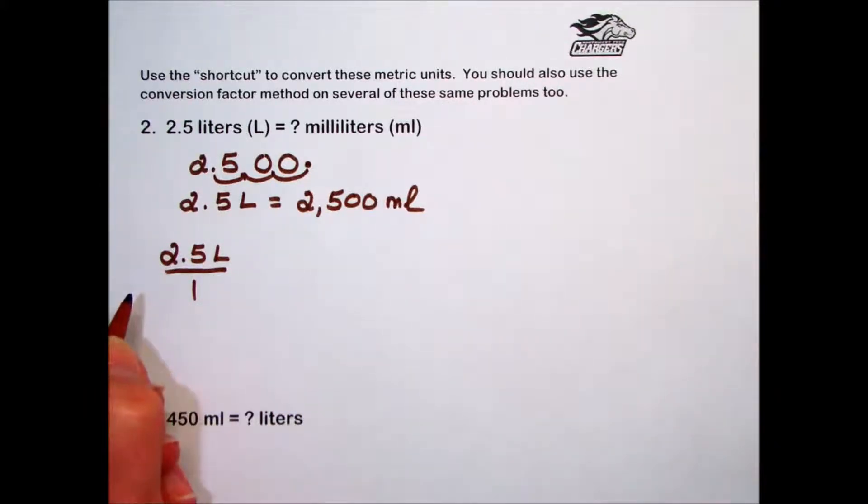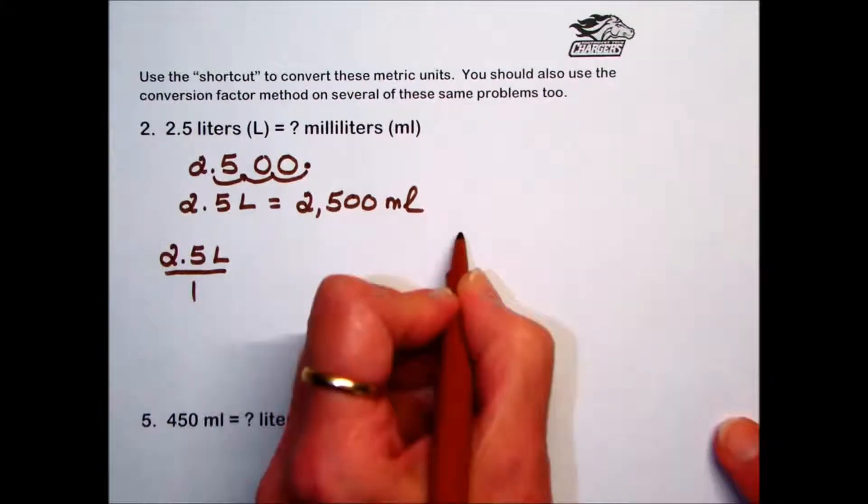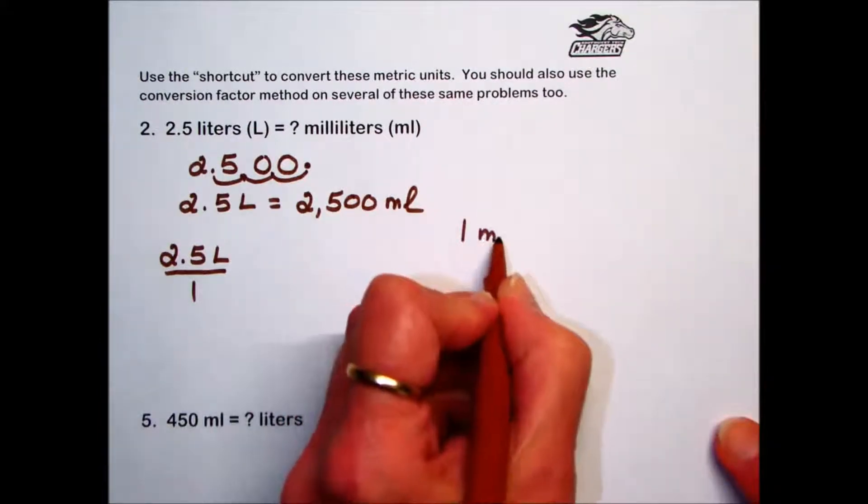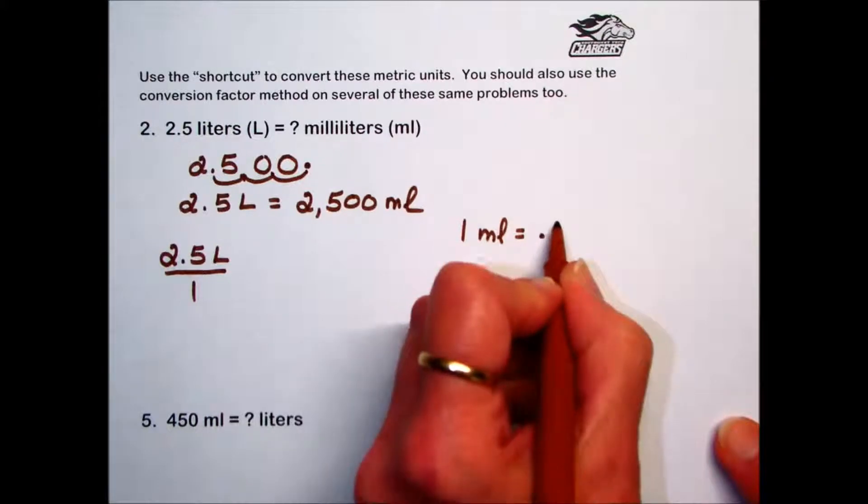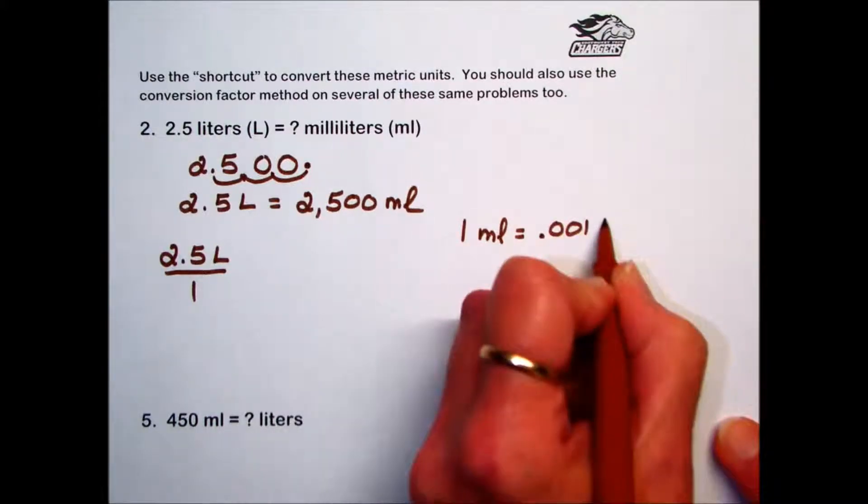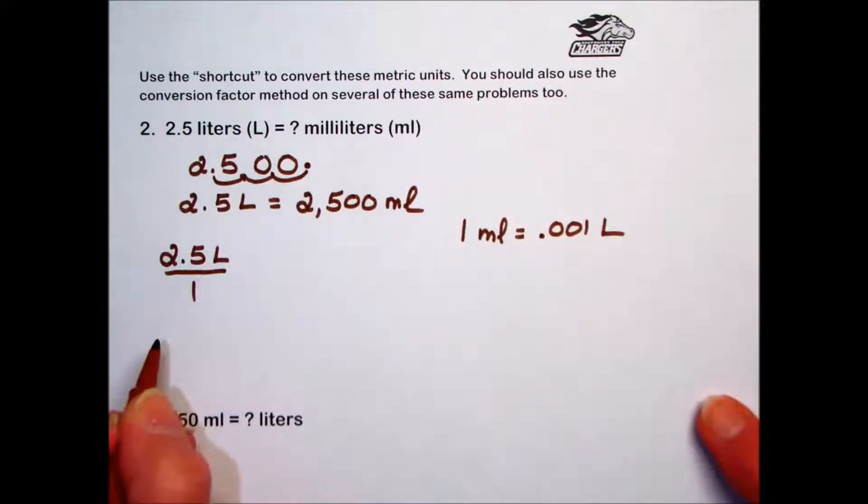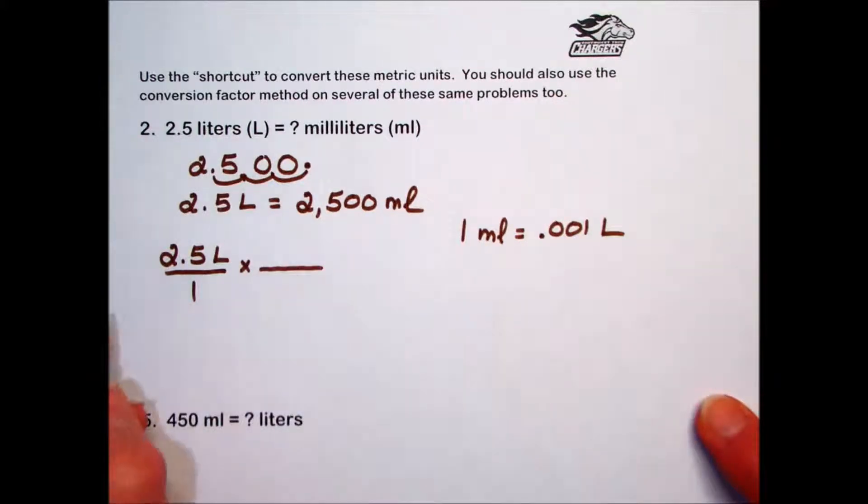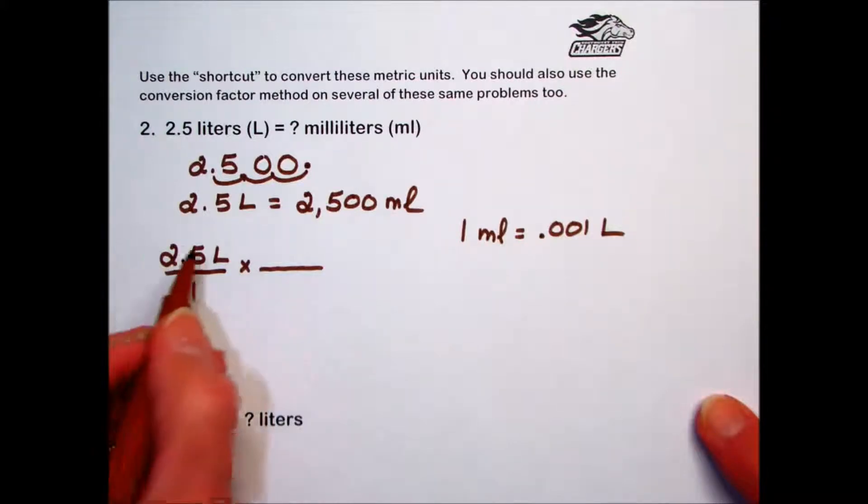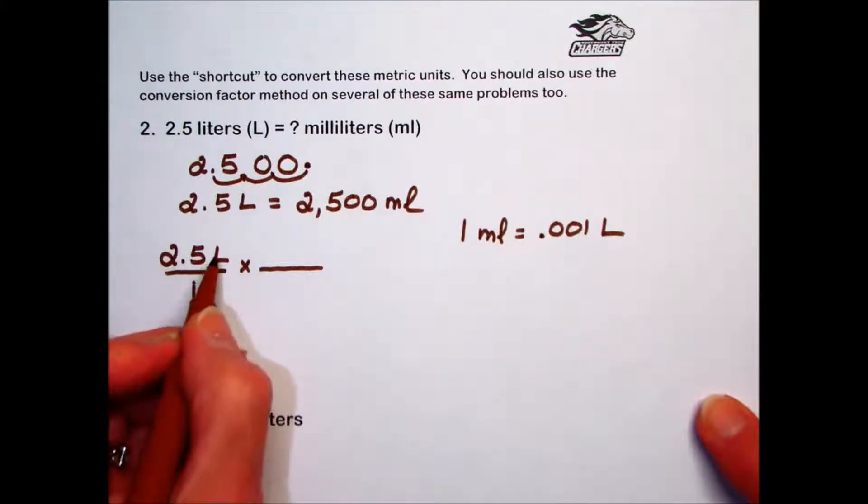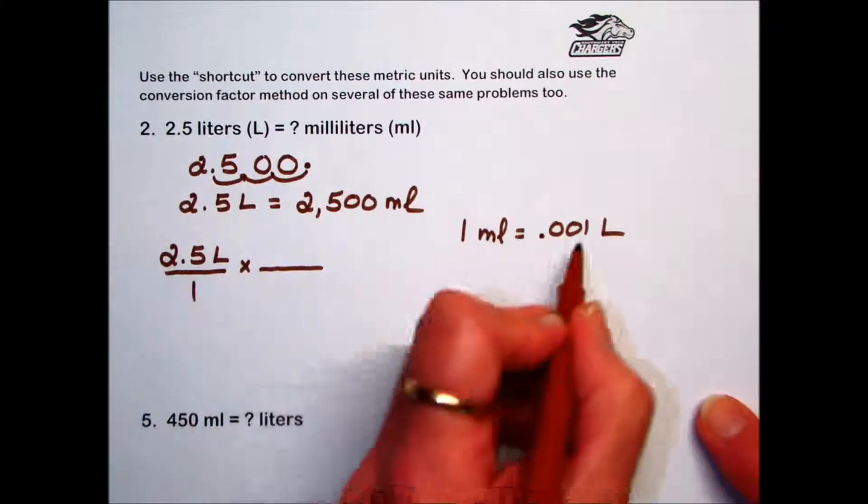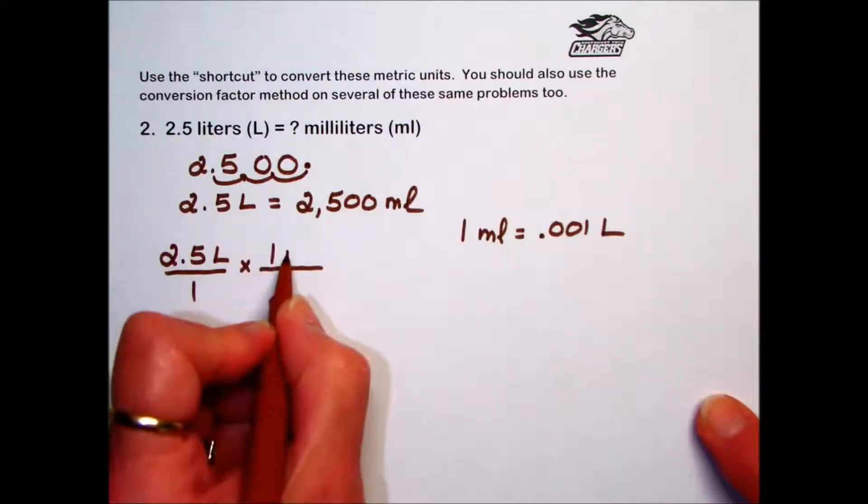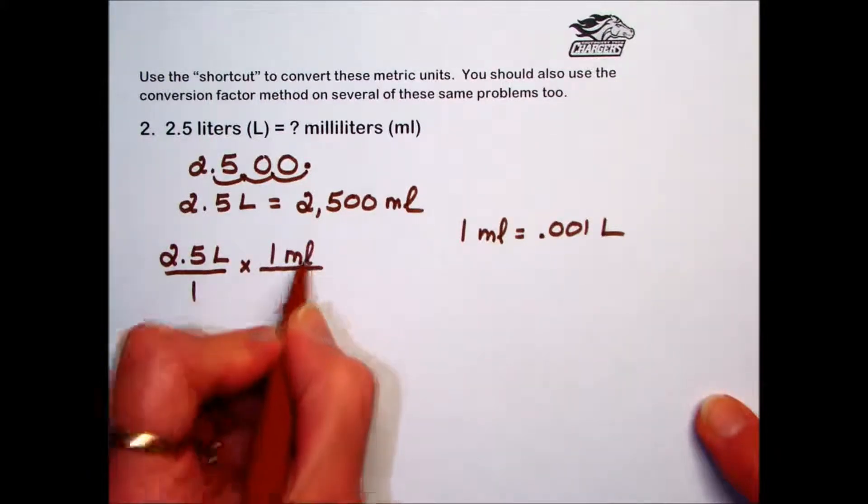We'll use the conversion factor that there is 1 milliliter equivalent to 0.001 or 1,000th of a liter. Expressing this relationship as a conversion factor fraction, the goal would be to eliminate the liters in the numerator. So we will put 1 milliliter in the numerator over the equivalent 0.001 liter in the denominator.